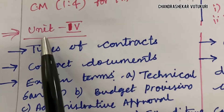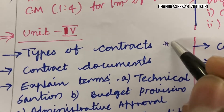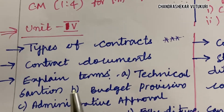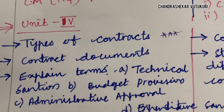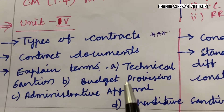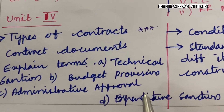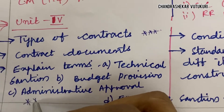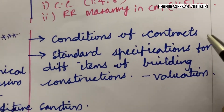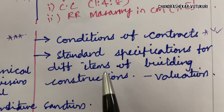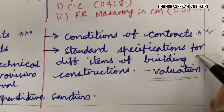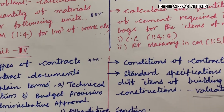The fourth unit is all about types of contracts — this is a bit of theory. You can expect both short and long theory questions from this unit. Topics include contract documents, technical sanction, budget provision, administrative approval, expenditure sanction, and conditions of contracts. Standard specifications for different items of building construction and valuation may also appear as the ninth question.